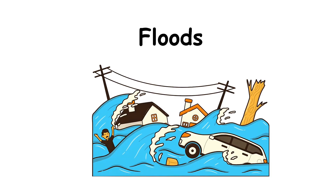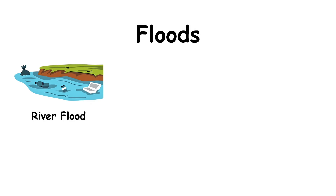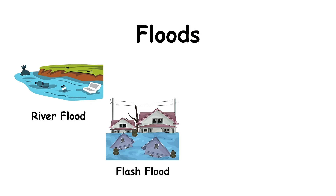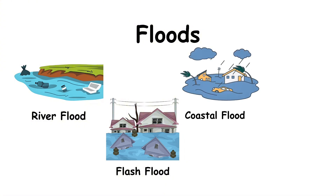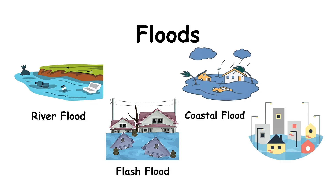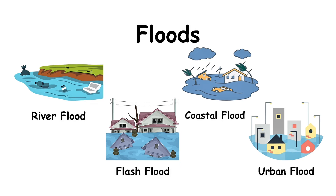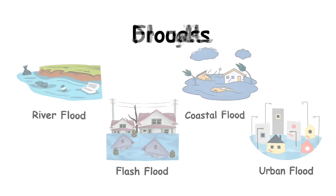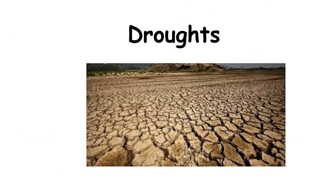Types of floods include river floods — when rivers overflow their banks; flash floods — sudden floods caused by heavy rainfall, often within minutes or hours; coastal floods — caused by storm surges, tsunamis, or high tides; and urban floods — which happen in cities due to poor drainage and heavy rain. Floods can sweep away homes, damage infrastructure, contaminate water supplies, and cause massive loss of life.